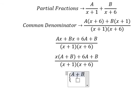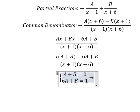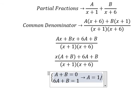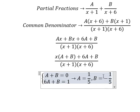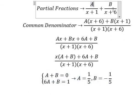A plus B equals to 0. 6A plus B equals to 1. And now we find the solution of A and B. So A equals to 1 over 5, B equals to negative 1 over 5. So we put the solution of A and B in here.